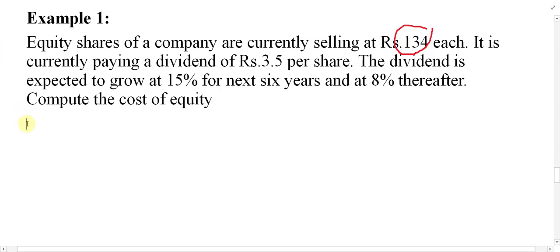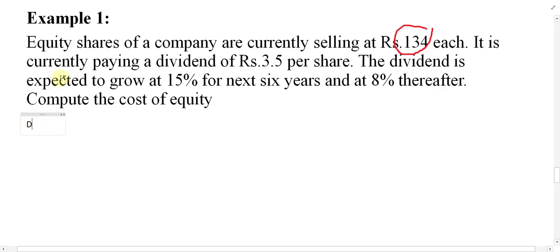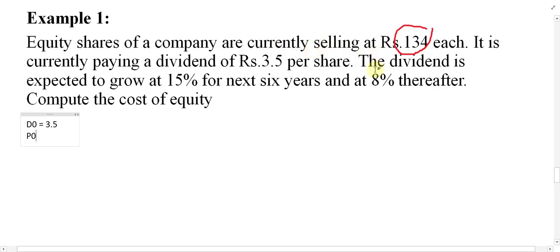First, identify the given elements. We need D0. Since the problem says the company is currently paying this dividend, it means this is D0, not D1. If it said 'expected to pay,' that would be D1. So D0 = 3.5. We also have P0, the current market price: P0 = 134.